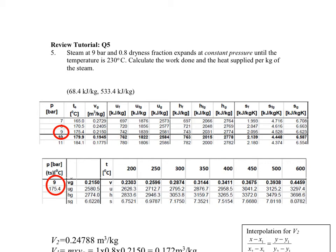In this question review of tutorial question 5, we are required to have a good understanding of the use of our steam table. The question states that steam at 9 bar and 0.8 dryness fraction expands at constant pressure until the temperature is 230 degrees centigrade. We are supposed to calculate the work done and the heat supplied per kilogram of the steam.